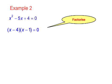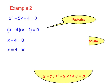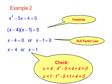Again, we have our null factor law, x minus 4 times x minus 1. So using that law, we get x minus 4 equals 0 or x minus 1 equals 0, from which x equals 4 or x equals 1. It's always a good idea to check to see that the answers are correct by substituting back into the original equation. You can do this for yourself.